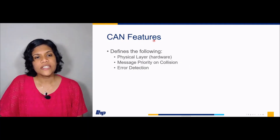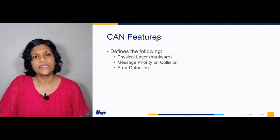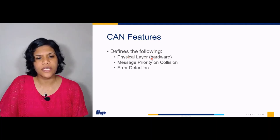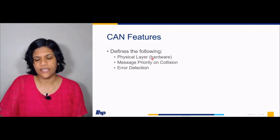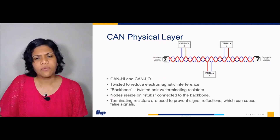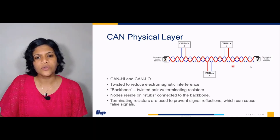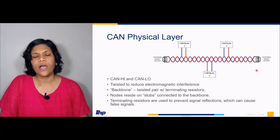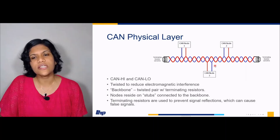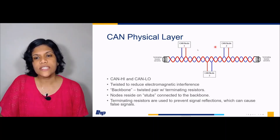Now I want to discuss the features of CAN under three topics. The first one is the physical layer. CAN bus has two wires — CAN high and CAN low — twisted together to eliminate electromagnetic interference, and it has two terminating resistors to prevent signal reflections. Otherwise, these signal reflections create false signals. These CAN nodes are nothing but ECUs.